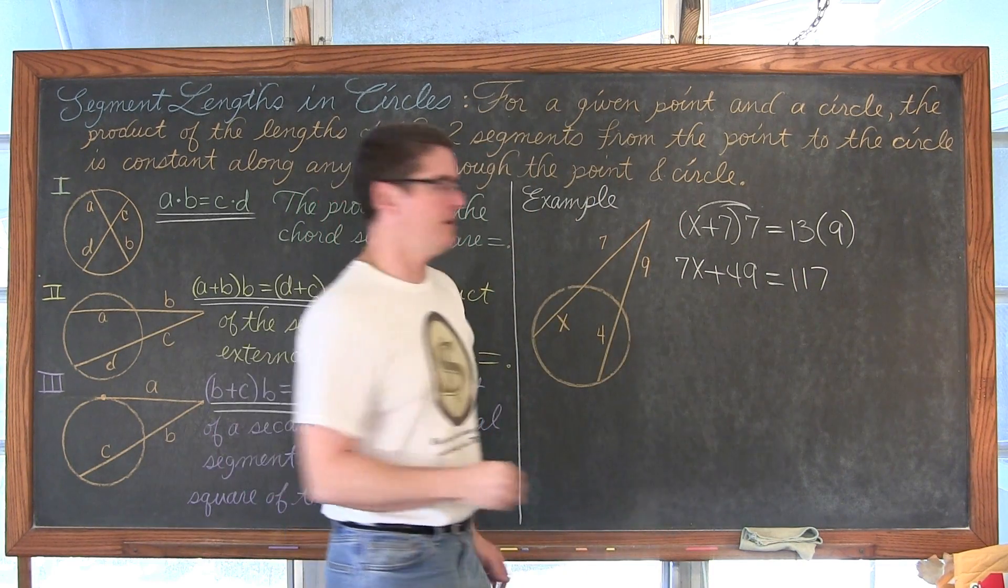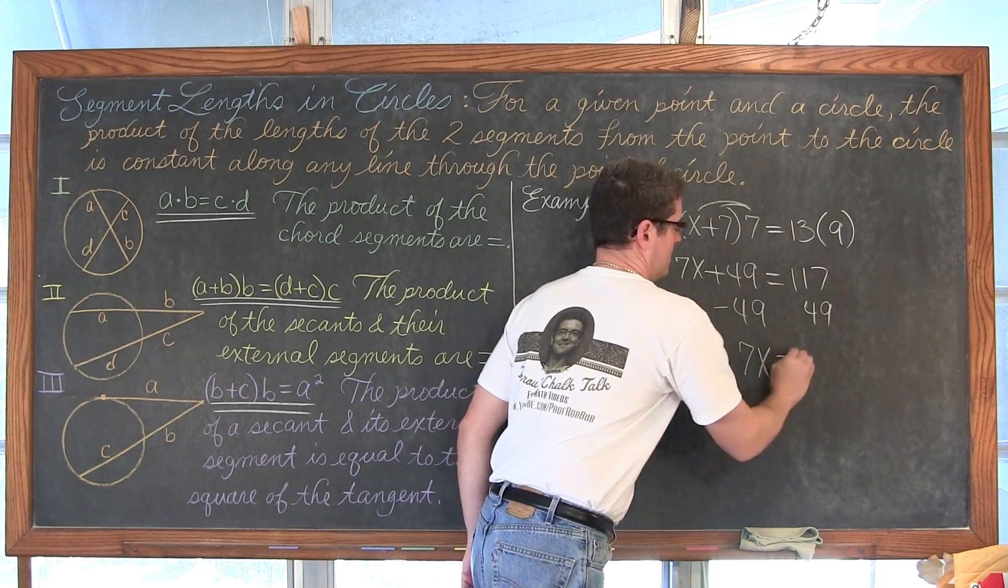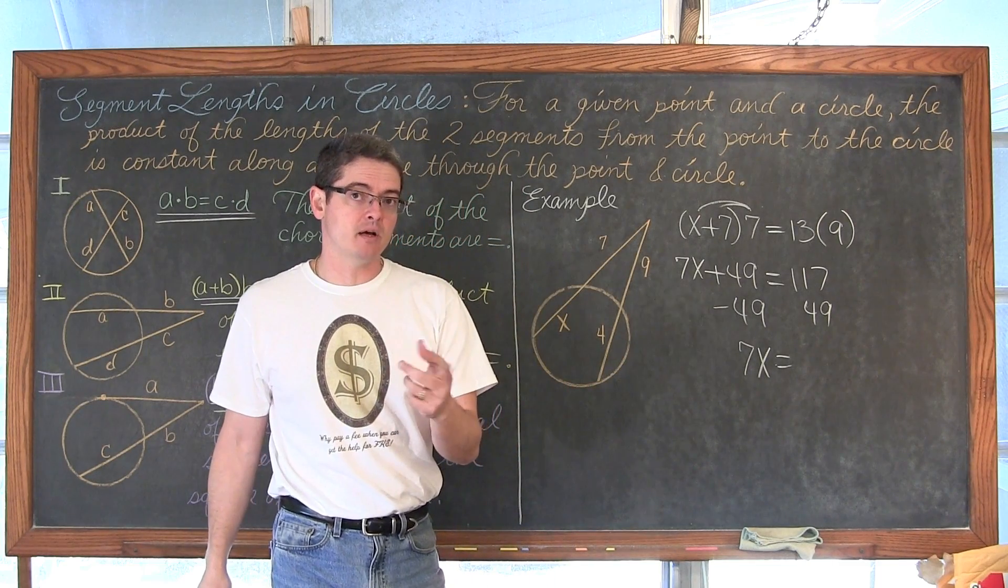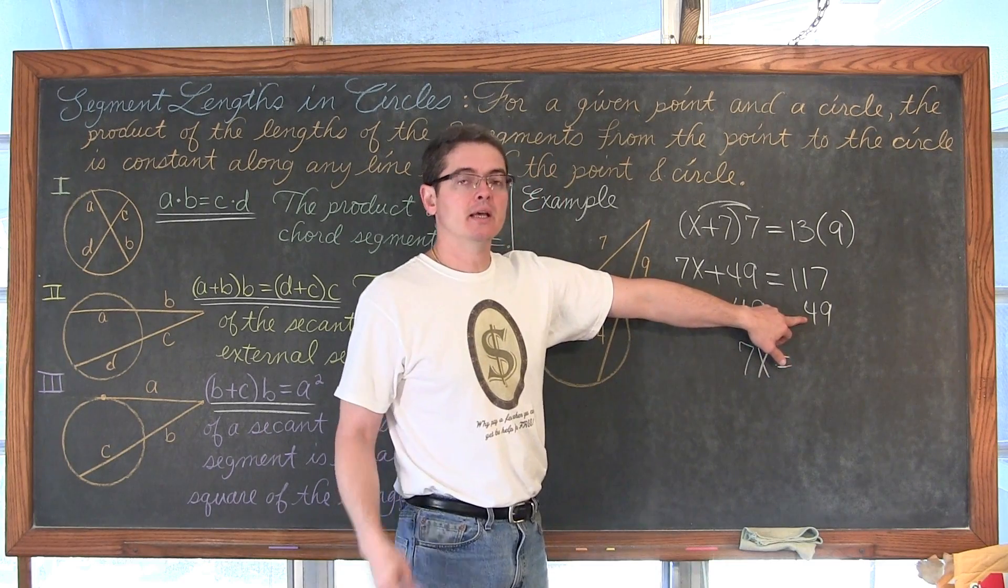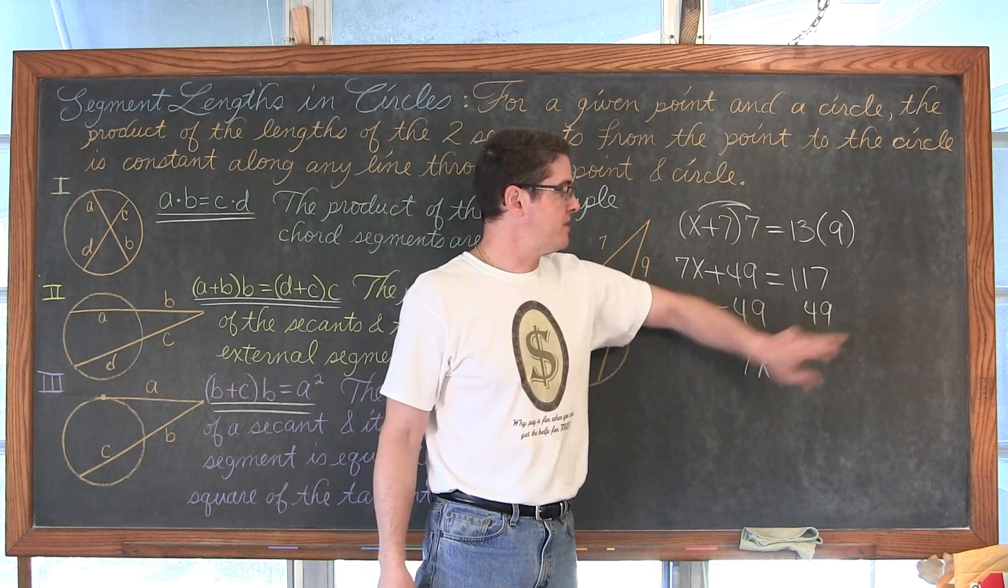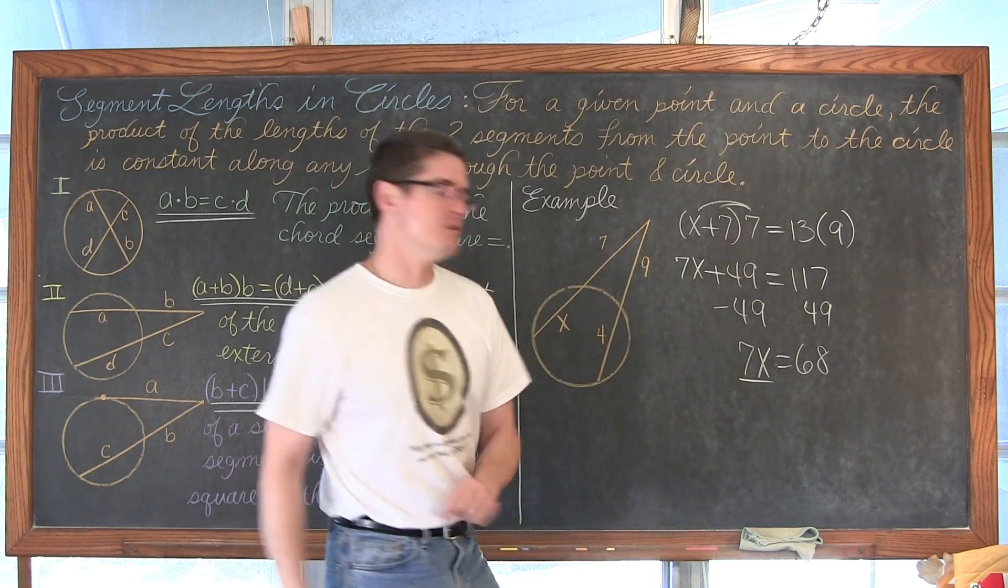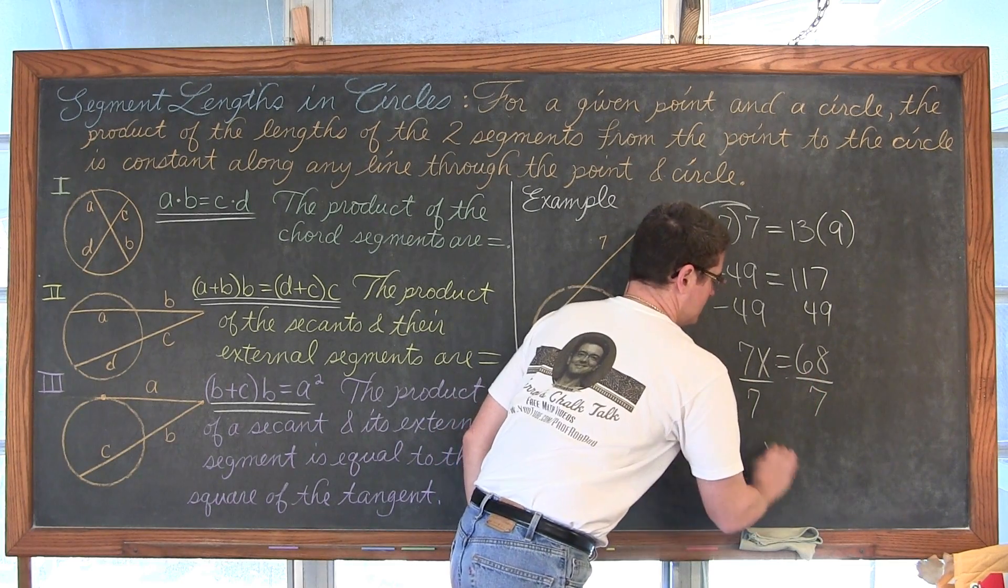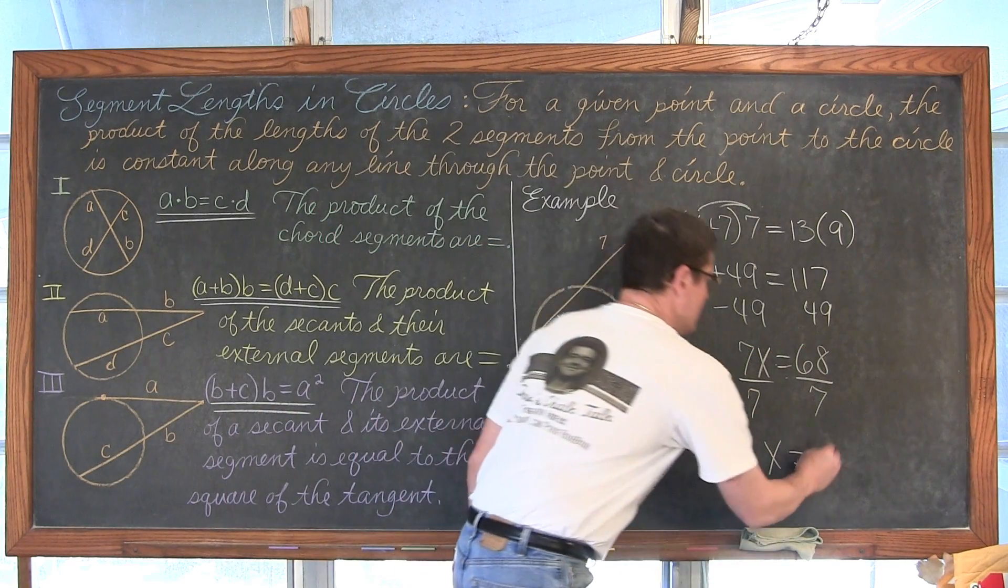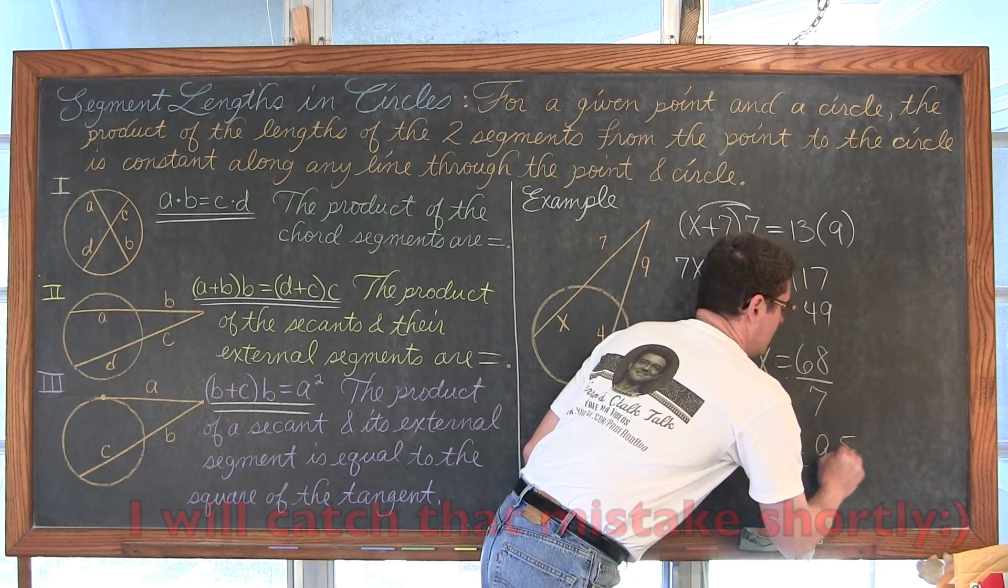We are going to subtract both sides by 49, trying to undo that addition. So we have 7x. Now, 117 minus 40 is 77, and 77 minus 9 is going to be 68. Now we are going to undo that multiplication with division, so we are going to divide both sides by 7. And 7 times 9 is 63, so we have 9. 68 minus 63 has a remainder of 5, so it is 9 and 5 sevenths.